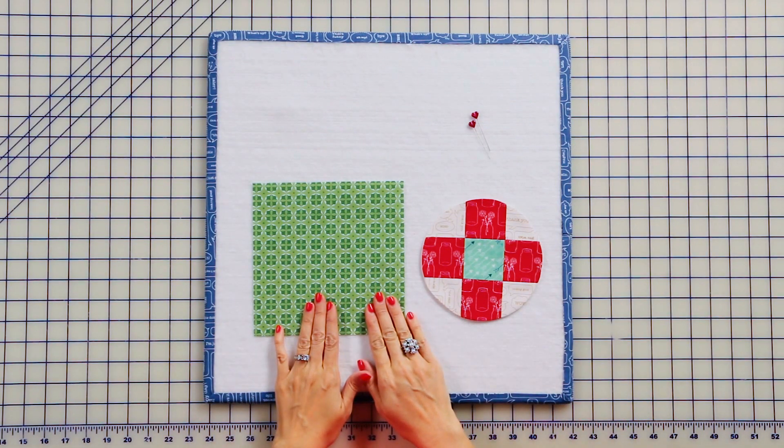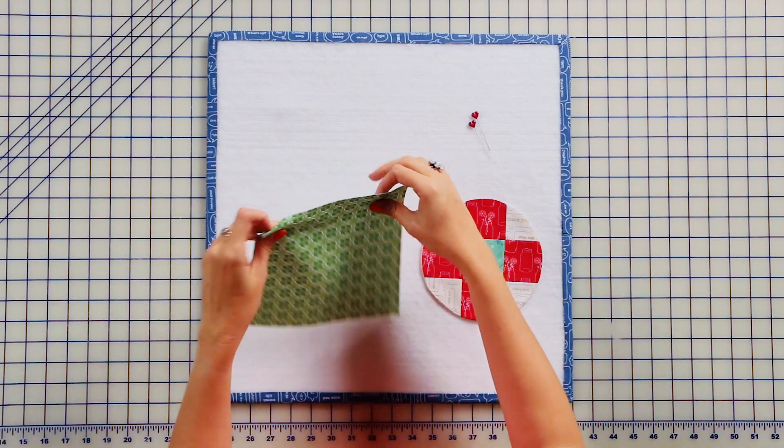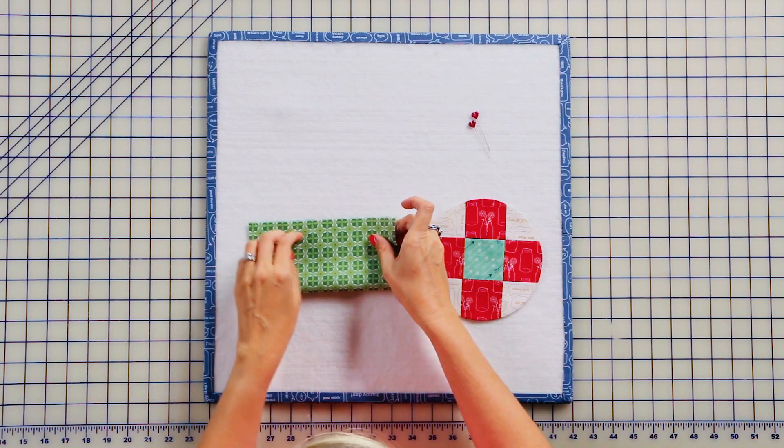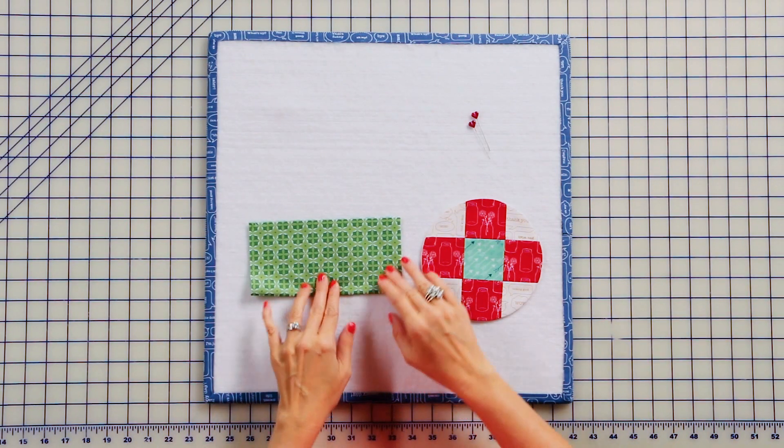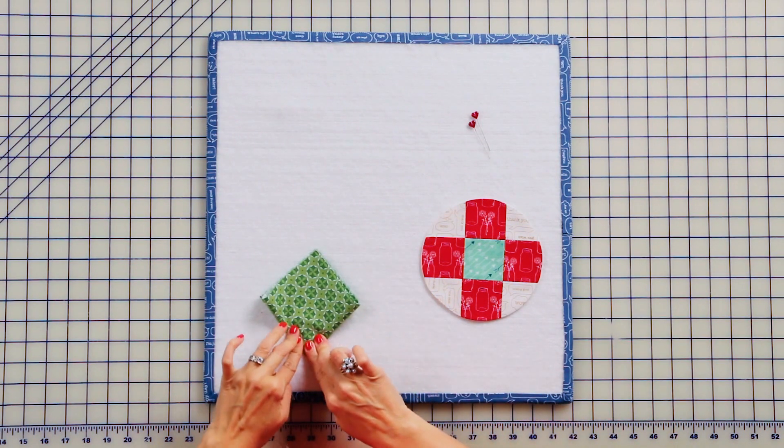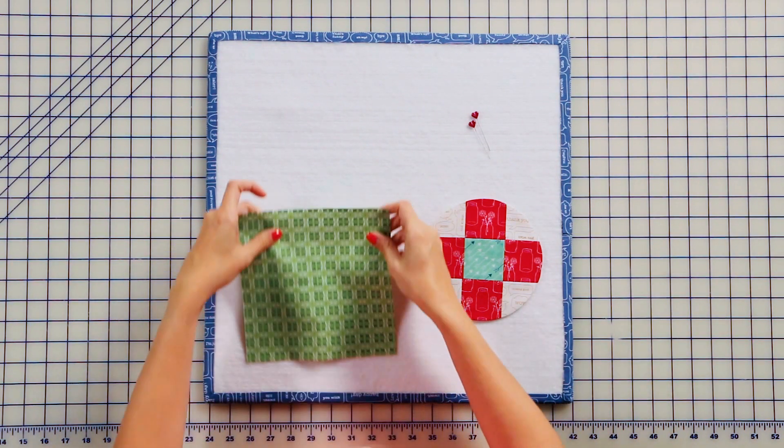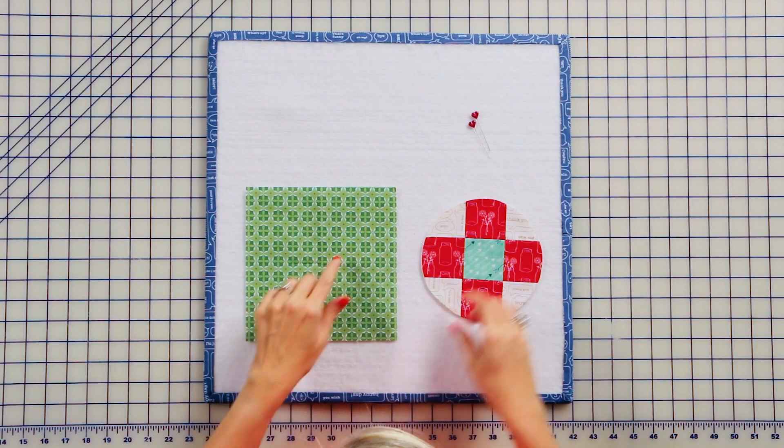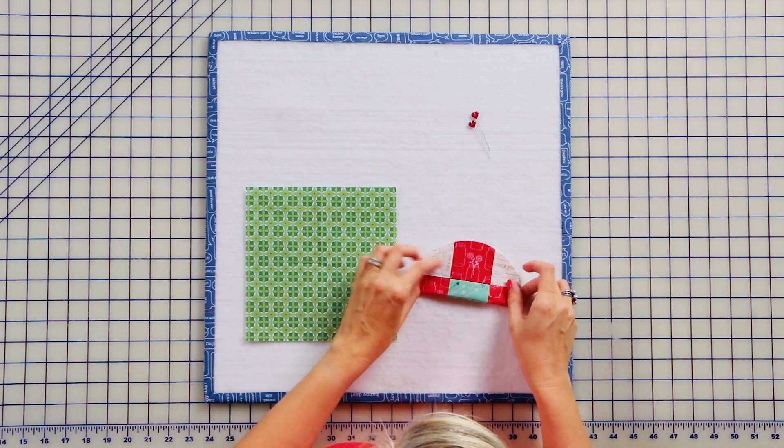Now we're going to take a 7 1/2-inch square. We're going to find the center by folding this in half and just finger press. There's your center. We're going to do the same thing with our circle.